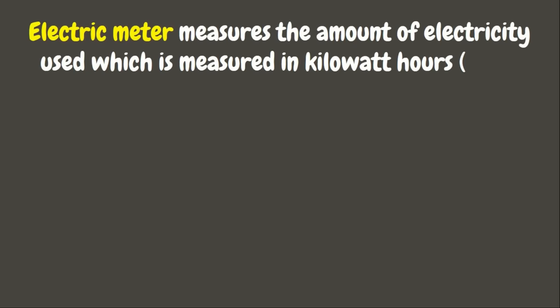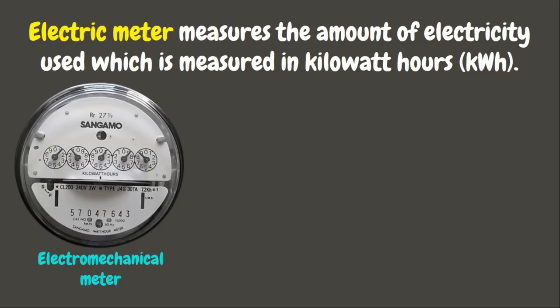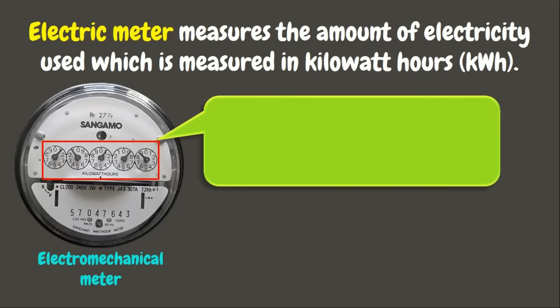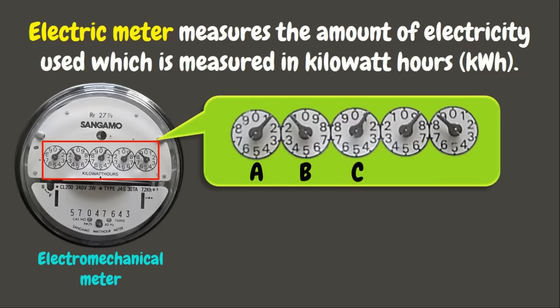An electric meter measures the amount of electricity used, which is measured in kilowatt hours. In an electric meter you will notice that there are five dials — dial A, B, C, D, and E. Inside each is a pointer which indicates the number to be read. The pointers will alternately turn clockwise and counterclockwise. These dials measure the number of kilowatt hours you use in ones, tens, hundreds, thousands, and ten thousands.